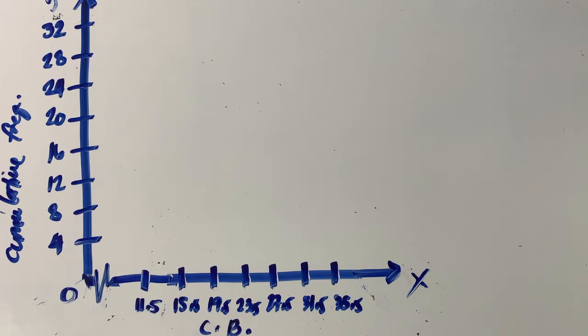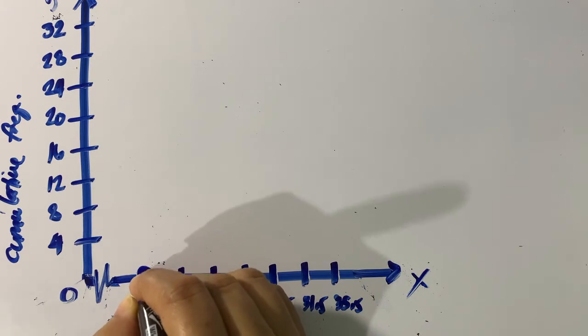How do we plot for an ogive? We are going to consider the cumulative frequency of each upper class boundary. For the first or added interval, the corresponding cumulative frequency there would be equal to 0, so we're going to plot it with 0.